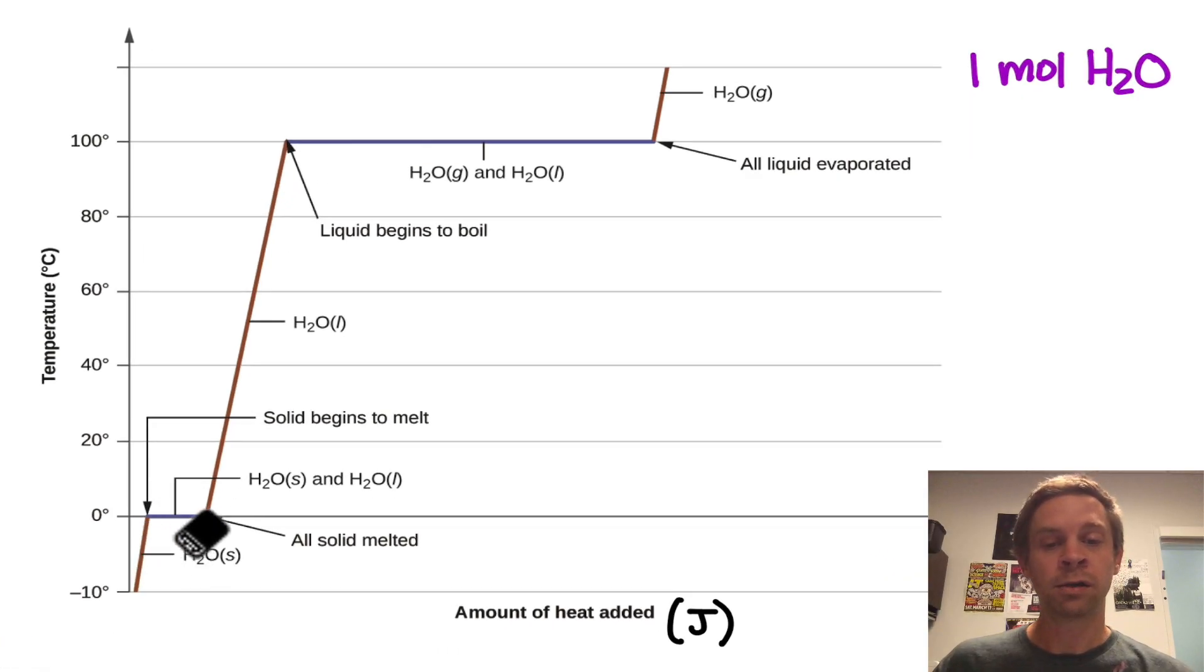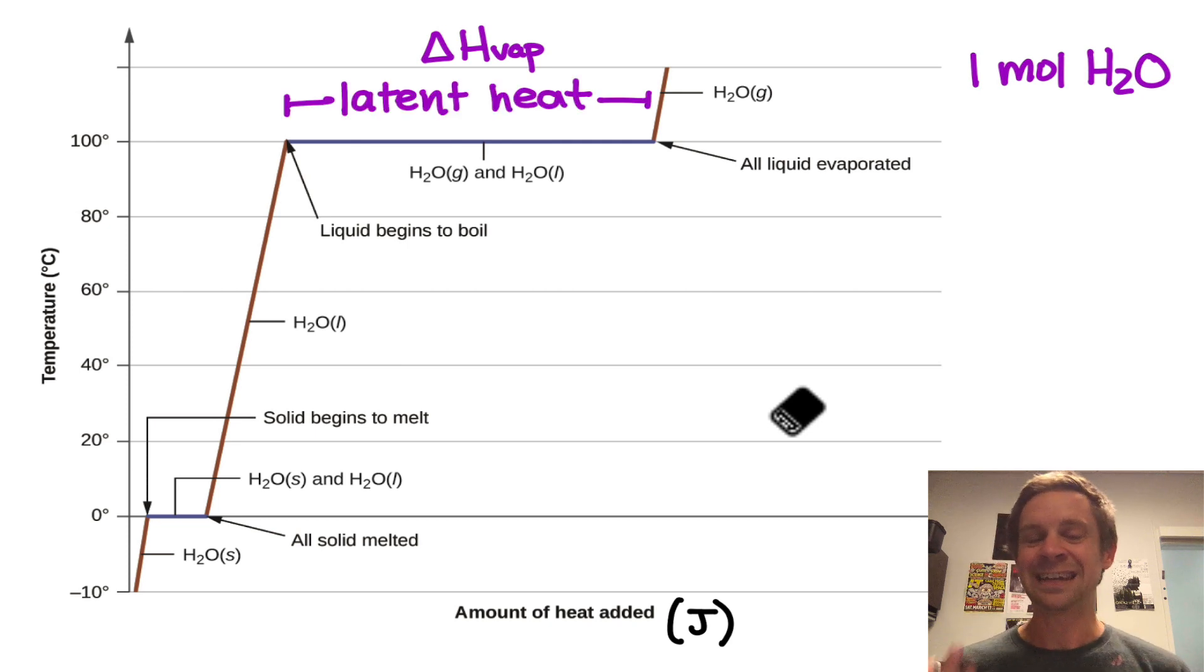However, we notice regions where we're adding heat, but the temperature is not increasing. These are locations where a phase transition is taking place. For example, this longer line up here shows the conversion of liquid water to gaseous water at 100 degrees Celsius. And the heat we have to put in to effect that evaporation process is the enthalpy of vaporization. These enthalpy changes of phase transitions are also known as latent heat, and I think the heating curve really gives you a sense of why this is.